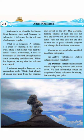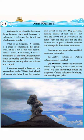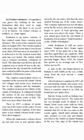Active volcanoes erupt regularly — their eruption happens always, continuously. Dormant volcanoes are temporarily inactive or in a deep sleep. We find information about the eruptions of these volcanoes in history, but now they are quiet. Extinct volcanoes: geographers can guess by looking at the rock formation that they used to erupt long, long ago, but there is no record of it in history. An extinct volcano is unlikely to erupt again.